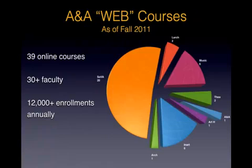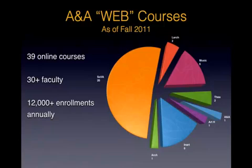Currently there are about 39 online courses within the college, spanning various disciplines — SOVA being the School of Visual Arts, including Fine Art, Landscape Architecture, Music, Theater, Art History, Integrative Arts, and Architecture. We have approximately 30-some faculty who have helped develop or teach courses, and our portfolio includes well over 12,000 enrollments annually. We service a general education, general arts population within the college, which accounts for a large majority of enrollments.